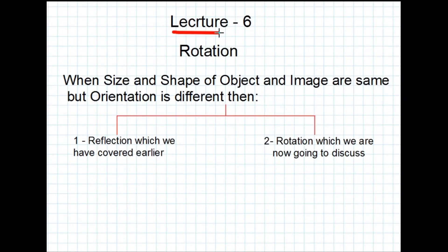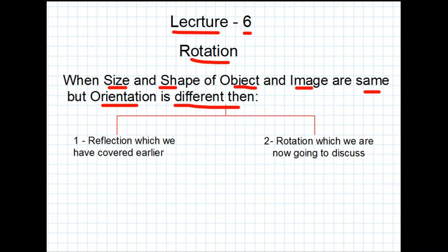Bismillahirrahmanirrahim. Today we are going to start lecture number 6. Our topic is rotation. When the size and shape of an object and image are the same but orientation is different, then there are two possibilities: reflection, which was covered earlier, and number 2 is rotation, which we are going to discuss.